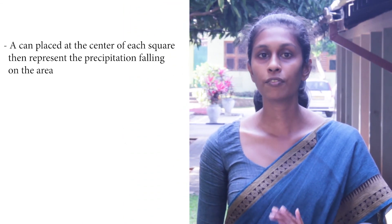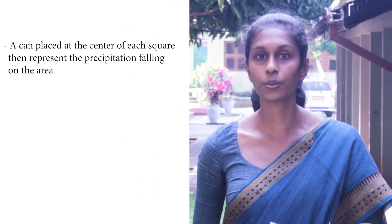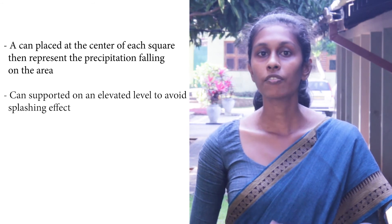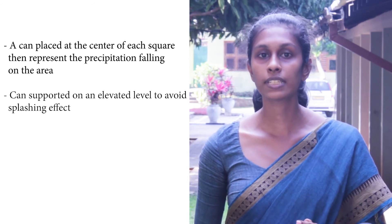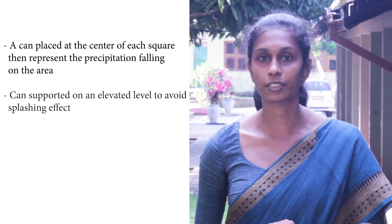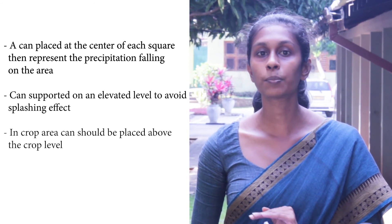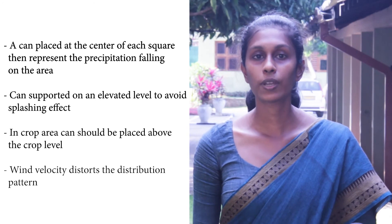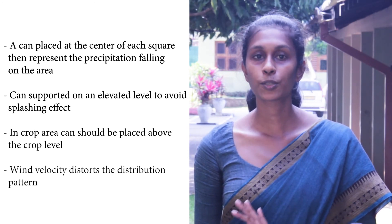Here are some key points to consider in this experiment. When placing the can, place it at the center of each square to indicate the precipitation falling on that area. Also, place the can in an elevated position to avoid the splashing effect. In a crop field, the can should be positioned above the crop level. This experiment also helps evaluate the wind effect on the distribution pattern.